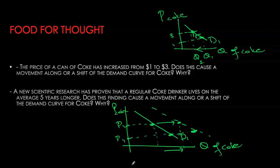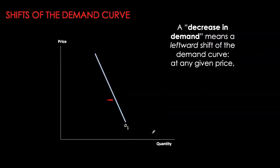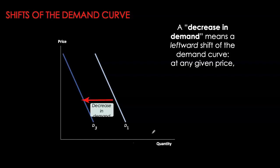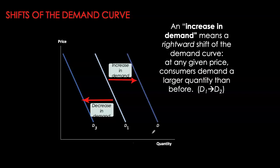So given your demand curve, if a factor changes and causes quantity demanded to decrease at any given price, that is a decrease in demand and causes the curve to shift to the left. If a factor changes in a way that causes quantity demanded to increase at any given price, that is a shift to the right. A quick way to remember: quantity is measured on the x-axis, so an increase is always to the right — moving away from the origin — and a decrease is always to the left.